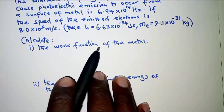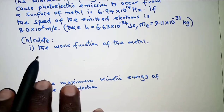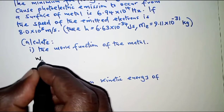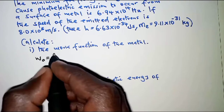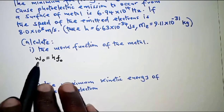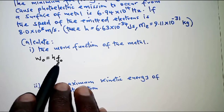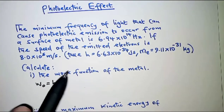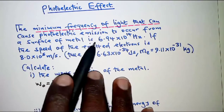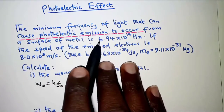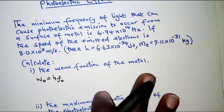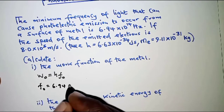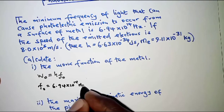For part one, the work function is the minimum amount of energy required by an electron to be dislodged from the metal surface. It is given by W₀ = hf₀, where W₀ is the work function and f₀ is the minimum frequency required to dislodge an electron from the surface. From the question, f₀ = 6.94 × 10¹⁴ Hz.